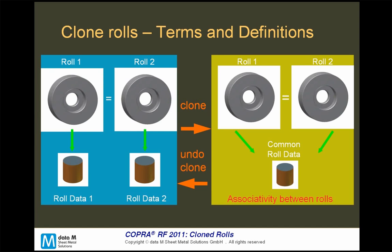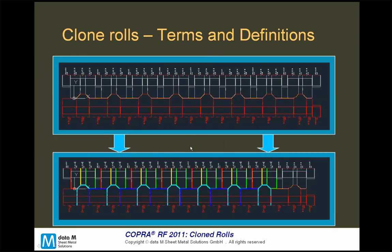It's better to describe the possibilities via a short picture. On the left-hand side, in basic roll design you have roll one and roll two, each with its individual roll information like material and borehole details. As soon as a roll is cloned, the rolls share common roll data — the same borehole details, the same material, the same geometry. Of course, it is sometimes necessary to remove the clone status, so you can at any time undo the clone, removing the information that two rolls are identical.